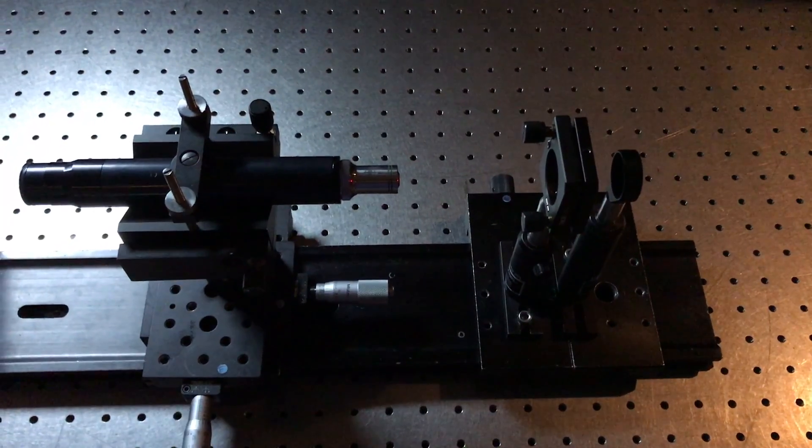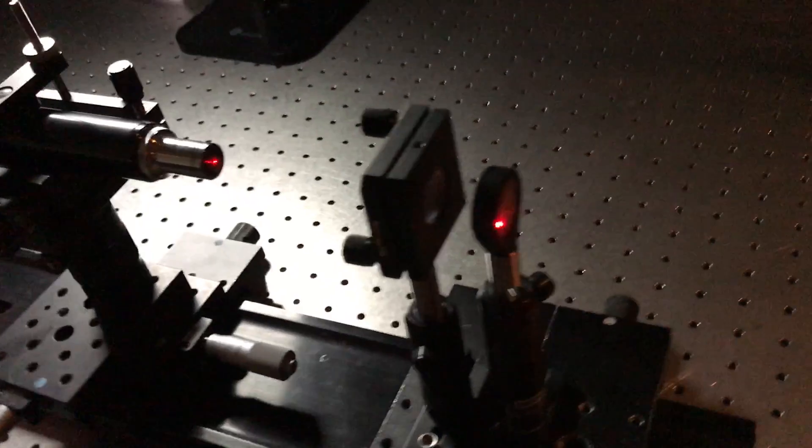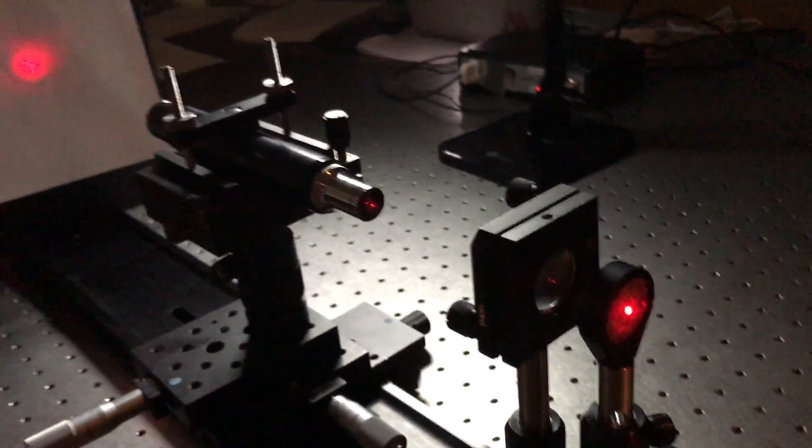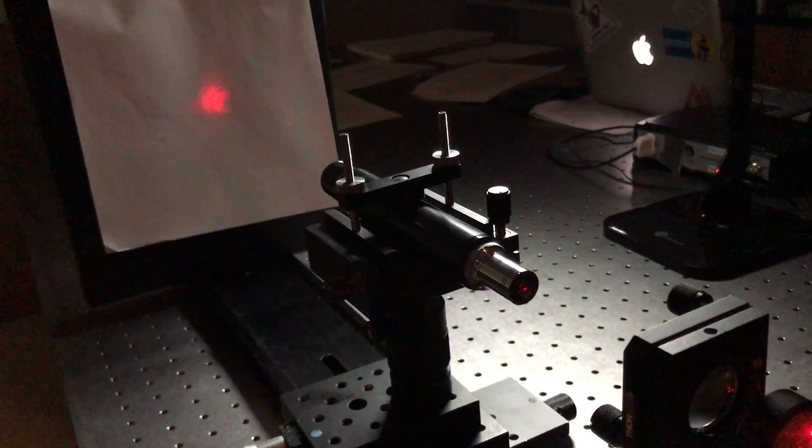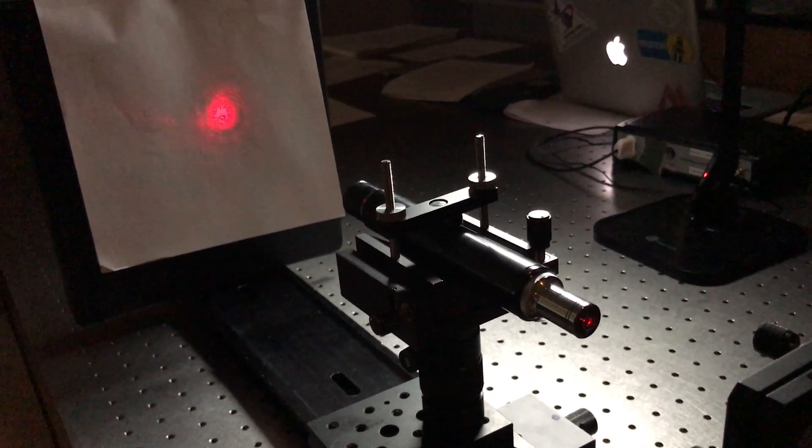So now we want to find what the longitudinal ray fan looks like. We went back to the extreme of the Hartmann mask. And this time we are moving axially along the axis and measuring the distance that the microscope moves versus the pupil position. And this should give us our longitudinal ray fan.